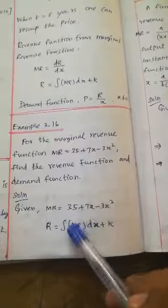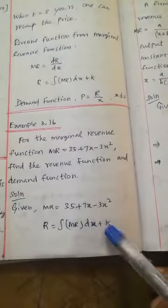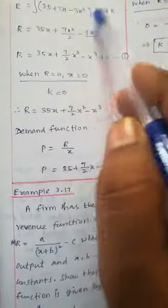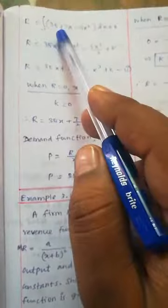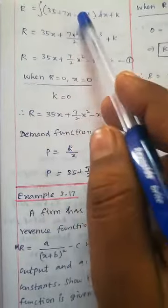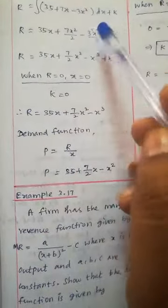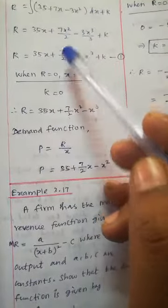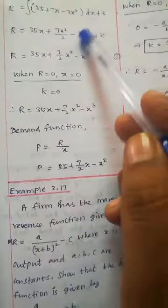R = ∫MR dx + k. R = ∫(35 + 7x - 3x²)dx + k. This equals 35x + 7(x²/2) - 3(x³/3) + k, which simplifies to 35x + (7/2)x² - x³ + k.